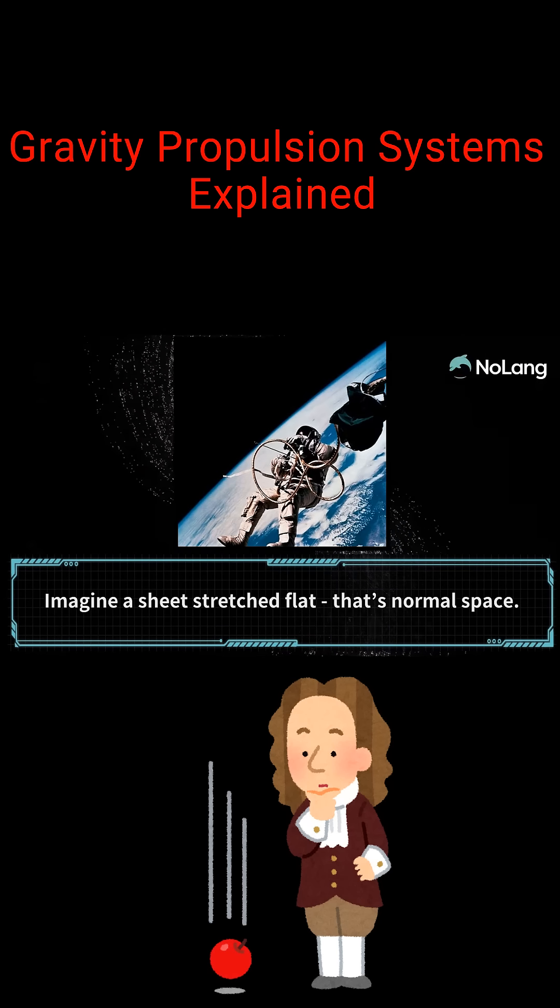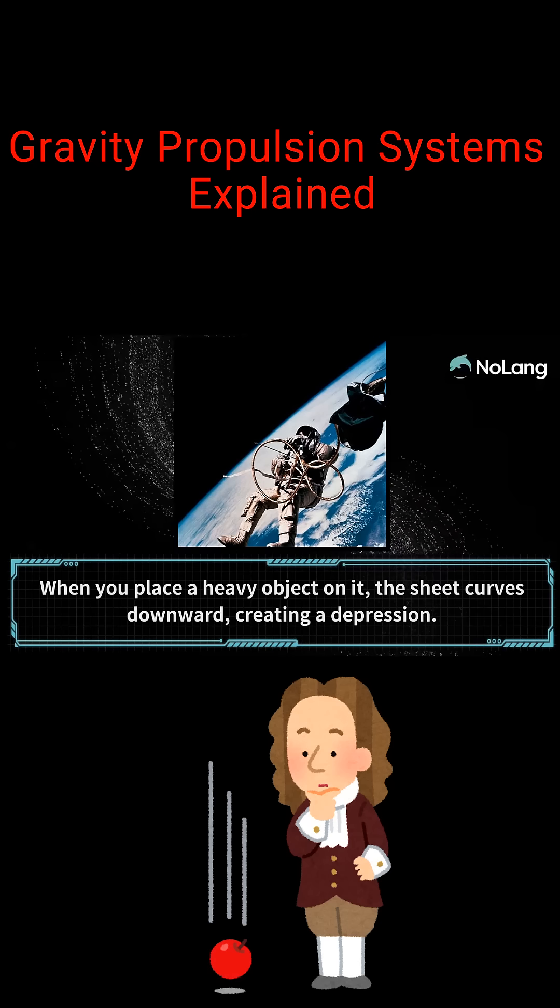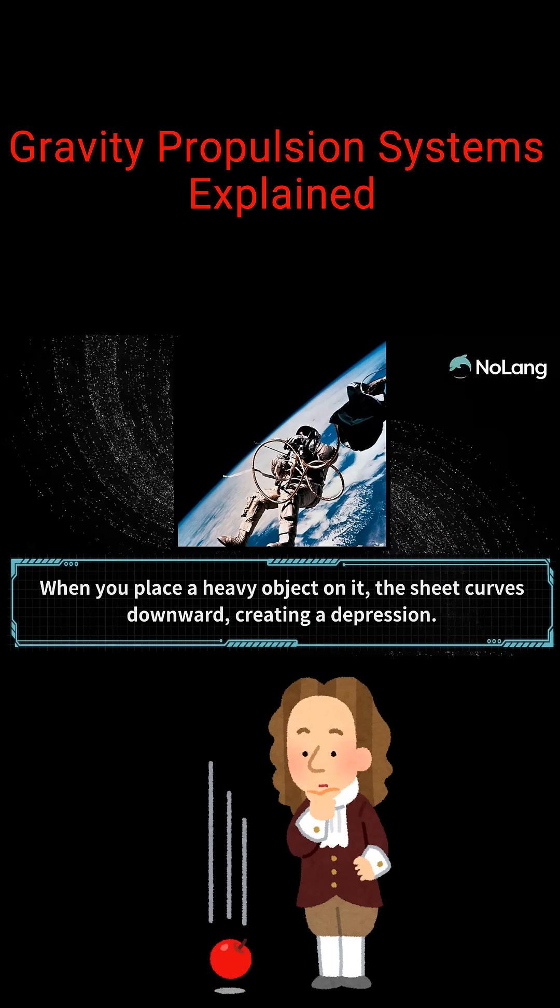Imagine a sheet stretched flat. That's normal space. When you place a heavy object on it, the sheet curves downward, creating a depression.